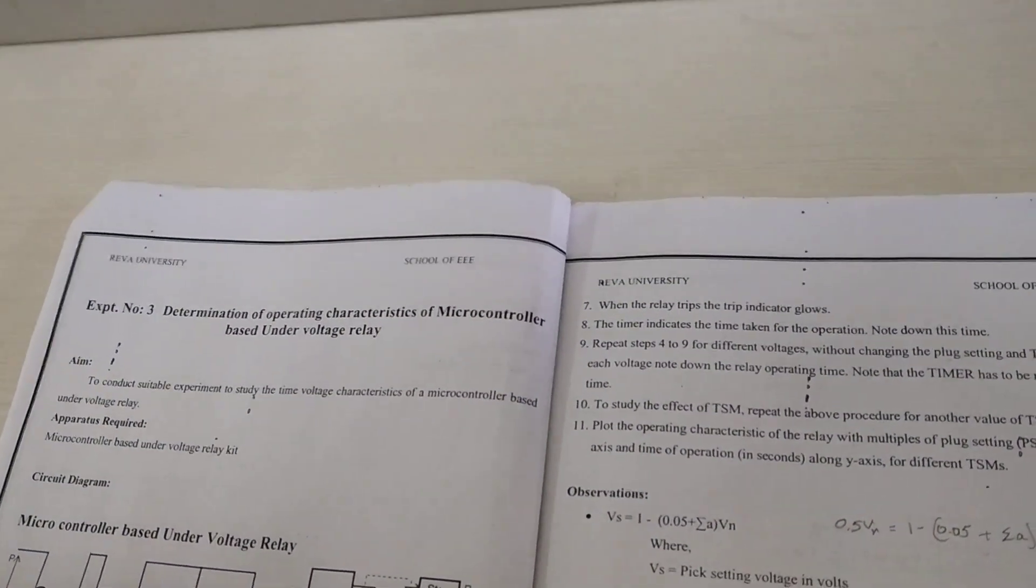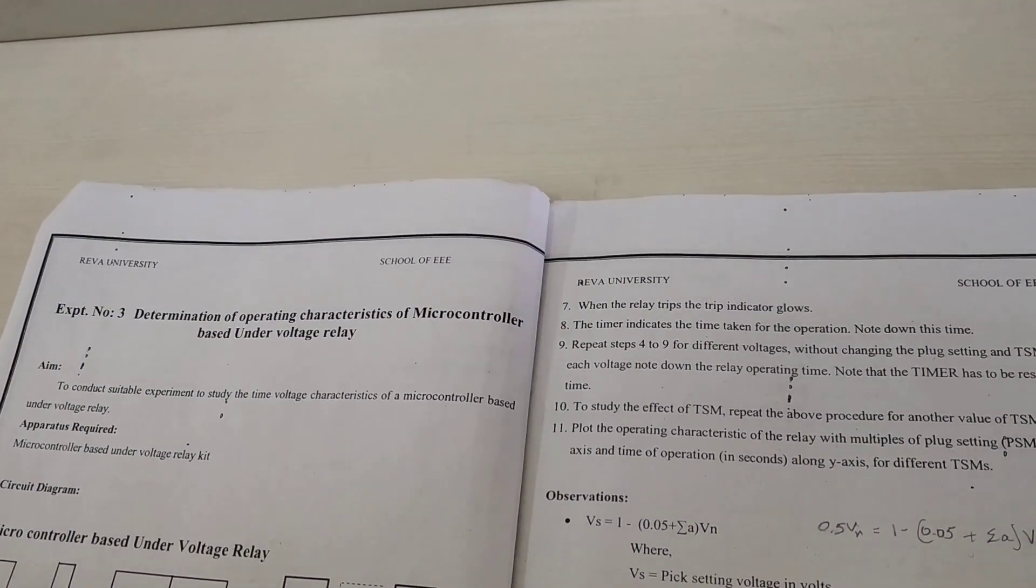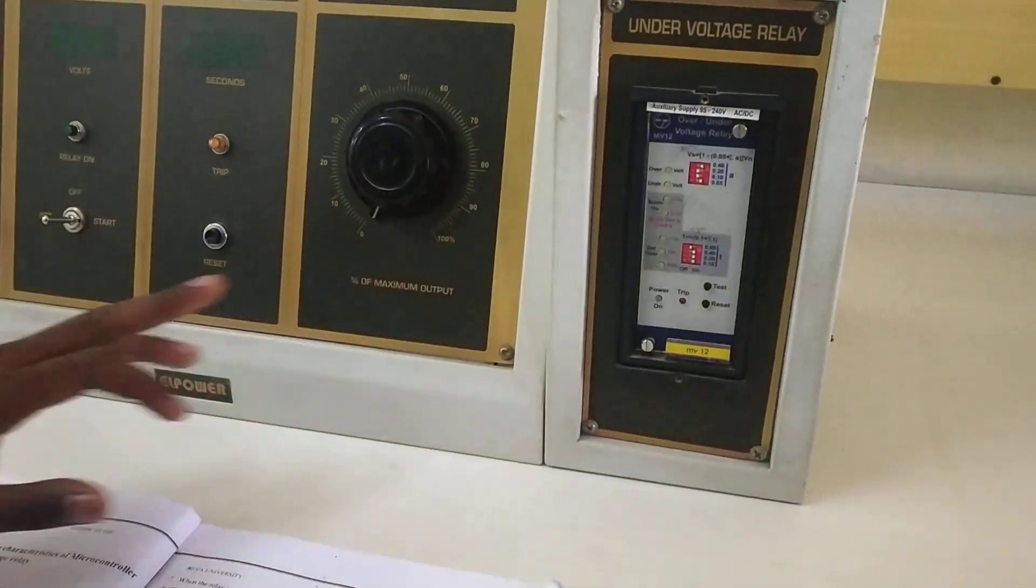This is the third experiment, the determination of operating characteristic of microcontroller-based under voltage relay. This is the microcontroller settings that you can see.